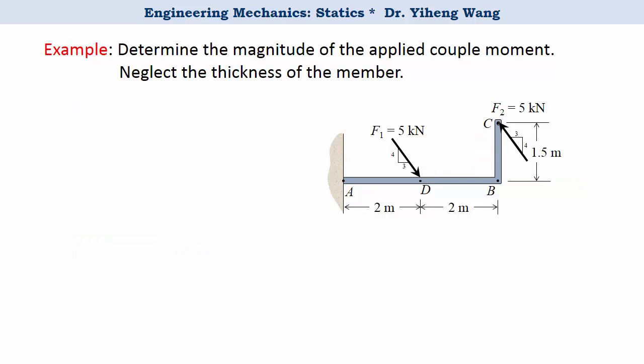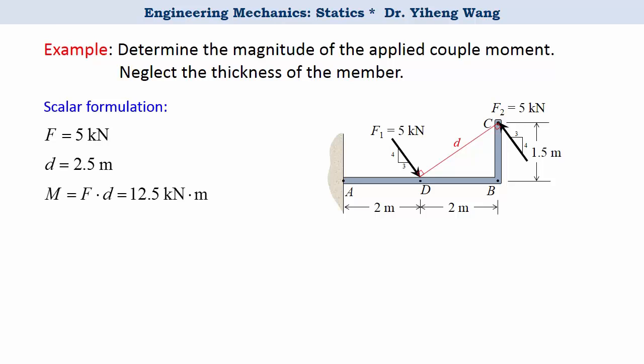Since this is a 2D problem, it is easier to apply the scalar formulation instead. We need the magnitude of one of the forces, which is 5 kN, and the perpendicular distance between the two parallel forces. From geometry, this distance is 2.5 m. The couple moment is simply F times d, giving 12.5 kNm. When applying scalar formulation, we manually determine the direction: the rotational effect is counterclockwise, therefore the moment is positive.